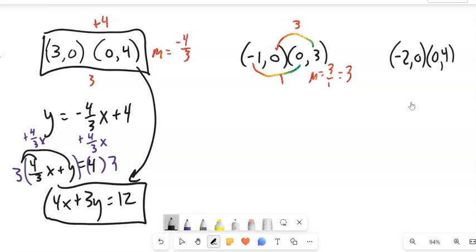Good stuff. So, and here's my y-intercept right here. So y equals 3x plus 3. Let's see, I can subtract 3x from both sides.